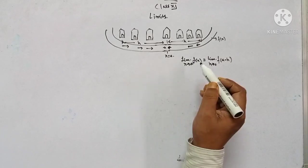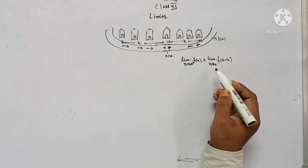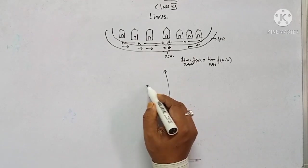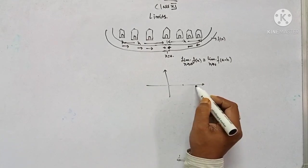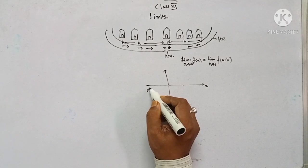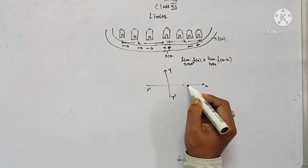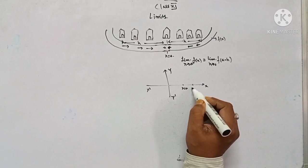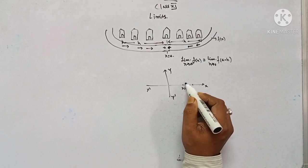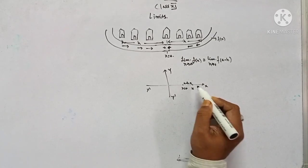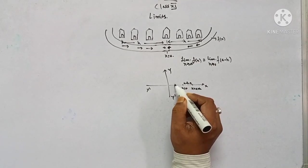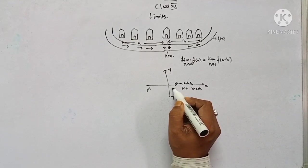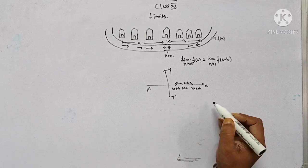Coming from the right side means a plus h, because the right side value is always greater than the left side. From the graph, any point you take, the right side value is greater. So if this is x equal to a, the right side point is a plus h, and the left side point is a minus h.